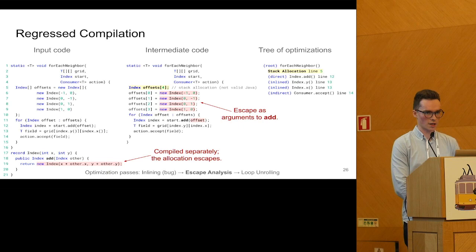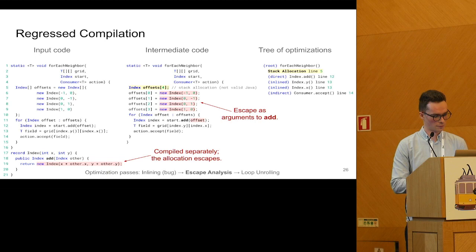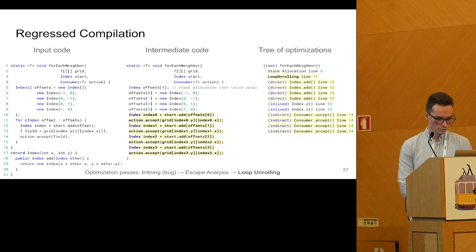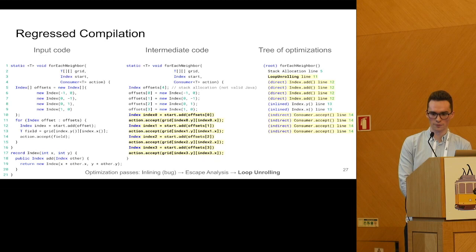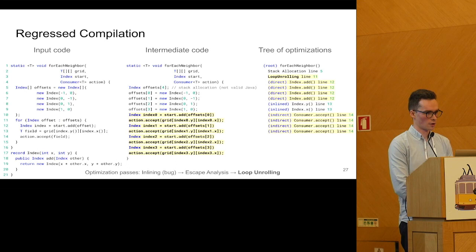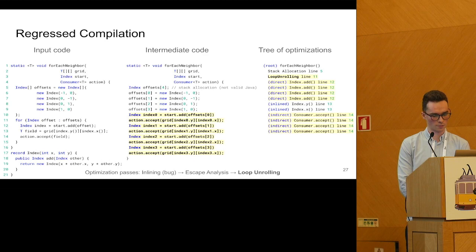The add method would now be compiled separately as a dedicated compilation unit. We can also see that the allocation escapes from that method as a return value, so we also have to place the allocation on the heap. Finally, loop unrolling — we can still get rid of the for loop by replacing it with four copies of its own body. We record the fact in the tree on the right that we did the loop unrolling. Now as a side effect, we have four copies of the call to the add method and also four copies of the call to the X method, so the tree on the right reflects that.